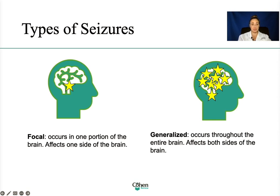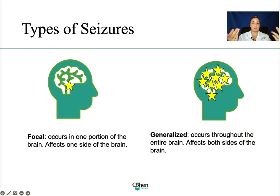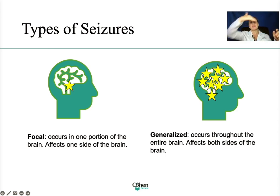There are two types of seizures: focal and generalized. Focal is also known as a partial seizure. You'll see that the brain has only one star here because it affects a specific part of the brain, and depending on the part affected, it determines how the patient may present with symptoms. A generalized seizure affects both sides of the brain throughout — hence the picture with a bunch of stars because it's affecting the entire right and left side.